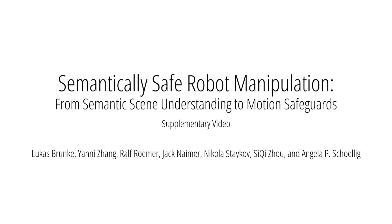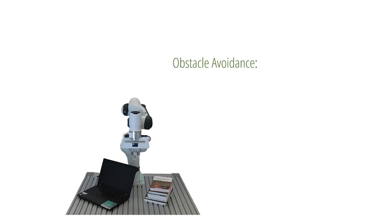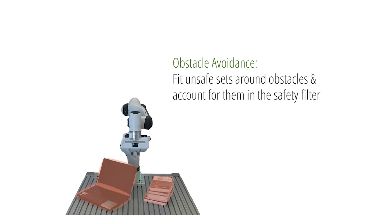This is the supplementary material to our paper called Semantically Safe Robot Manipulation: From semantic scene understanding to motion safeguards. Consider a tabletop environment with a robot manipulator and the task of obstacle avoidance. Assuming the objects in the scene are known, we can incorporate constraints for the objects in a safety filter to avoid them during robot operation. We demonstrate this with a short example.